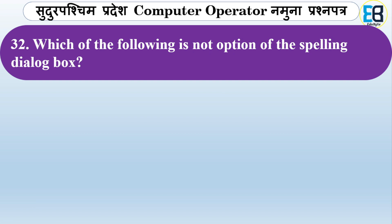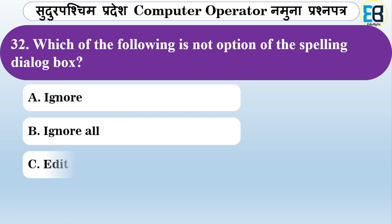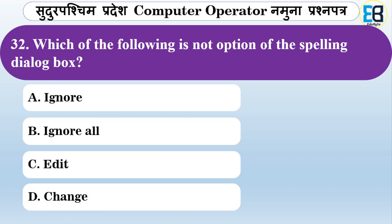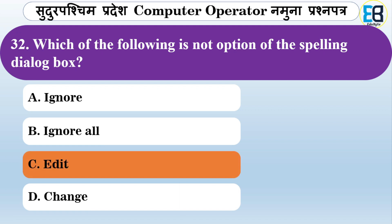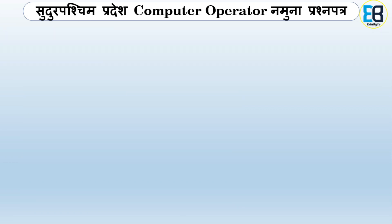Which of the following is NOT an option in the Spelling dialog box? Options are Ignore, Ignore All, Edit, or Change. The correct answer is Edit — Edit is not an option in the Spelling dialog box.